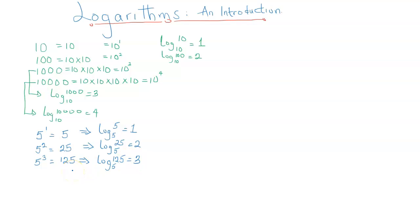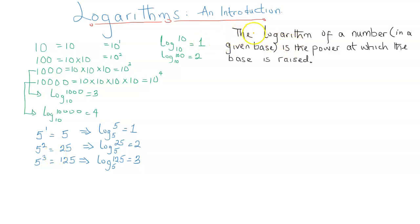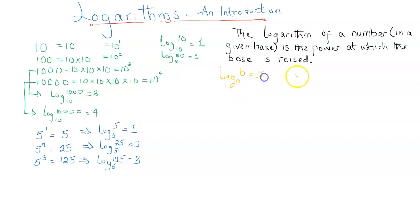Looking at this pattern, we can define logarithms as follows: the logarithm of a number in a given base is the power to which the base is raised. To generalize this, the log of a number b to a certain base a — if the logarithm equals x, what it implies is that a to the power of x is going to be equal to b.